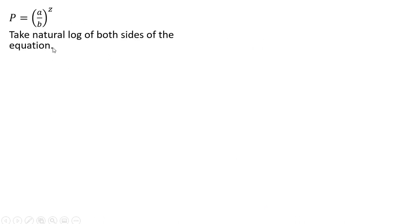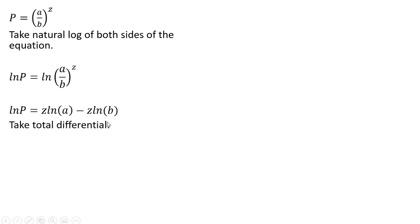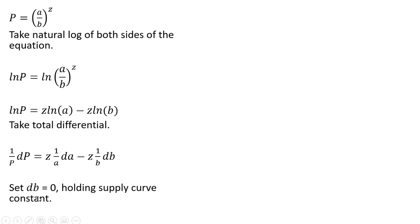I want to take the natural logs of both sides and clean up the right-hand side. Following the rules of natural logs, we can write the right-hand side accordingly. Now I want to take the total differential. The derivative of the natural log of p is 1 over p multiplied by the change in p. On the right-hand side, the derivative of the natural log of a is 1 over a, multiplied by z and then by the change in a. We're not interested in shifting the supply curve, so we hold that constant — setting db equal to 0 — and that term drops out.